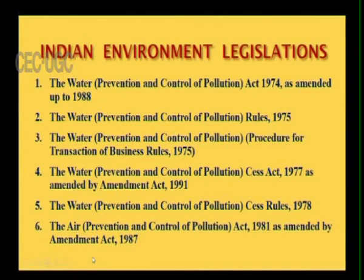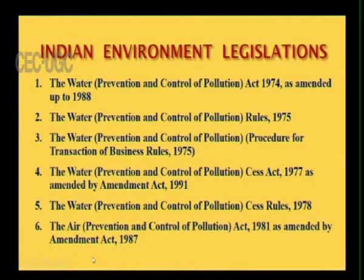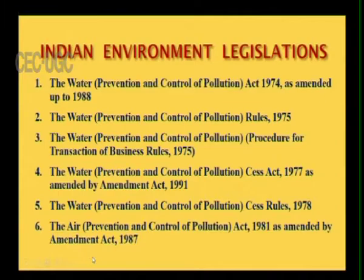Indian environmental legislations. The first one: in 1974, after the Stockholm Declaration, the Indian government enacted a parliamentary legislation, namely the Water Prevention and Control of Pollution Act, 1974. Under that act, rules were also passed in the year 1975, namely the Water Prevention and Control of Pollution Rules, 1975. Then we have the Water Prevention and Control of Pollution Procedures for the Transaction of Business, the Water Prevention and Control of Pollution Cess Act, 1977, which has also been amended in the year 1991.